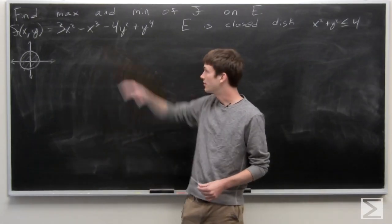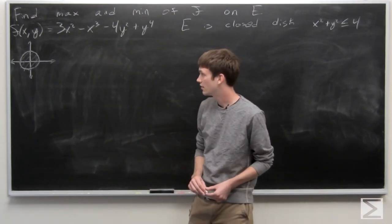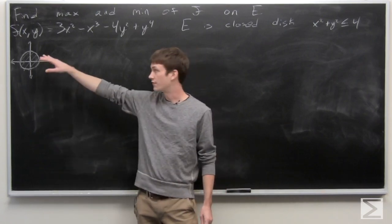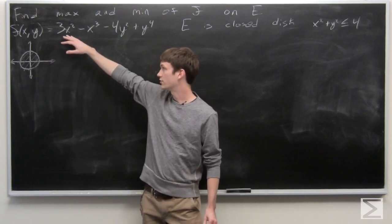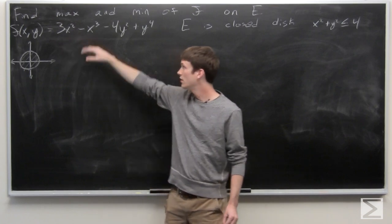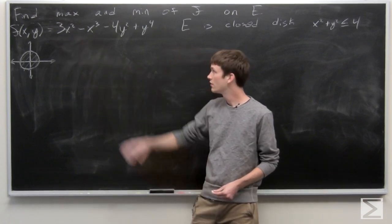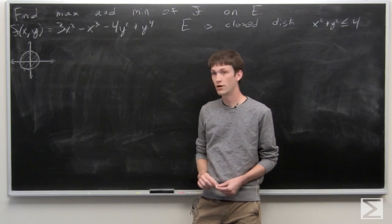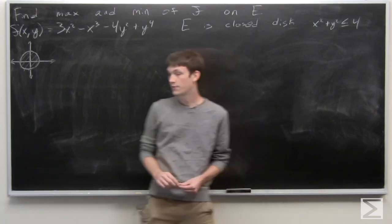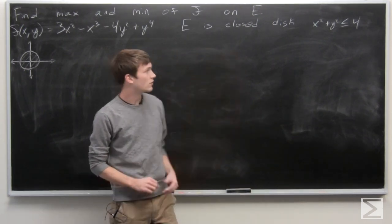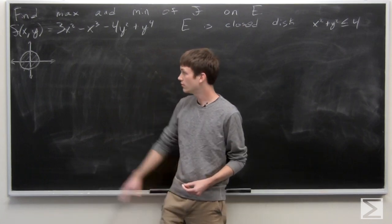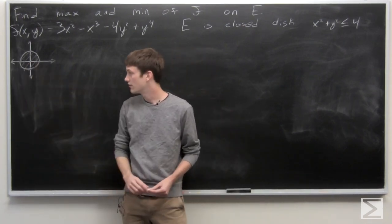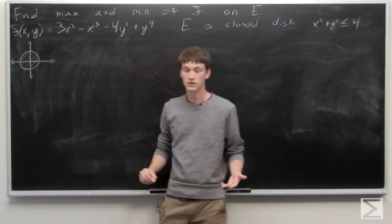In this problem, we're asked to find the max and min of f on our compact region E, where f(x,y) is given as 3x squared minus x cubed minus 4y squared plus y to the 4th. And E is given as the closed disk of radius 2, centered at the origin, and we have a little sketch there.